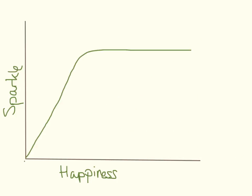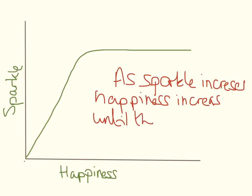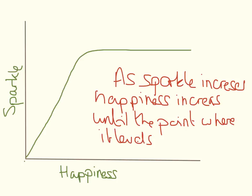Here we have the same axes and a very similar graph. We can see that as sparkle increases, happiness increases up to a level, which means at a certain point, no matter how sparkly it is, it's not going to make me any happier. So here we need to write two things down — this will probably be a two-mark question in the exam. The examiner will be looking for you to say something about the first part of the graph, and then something separate about the second part.